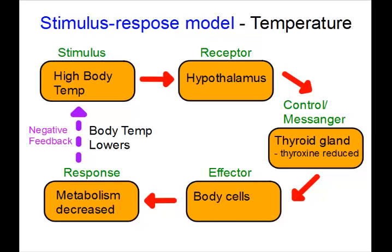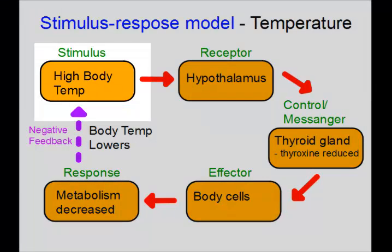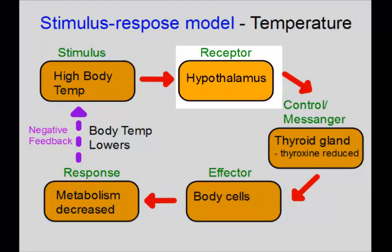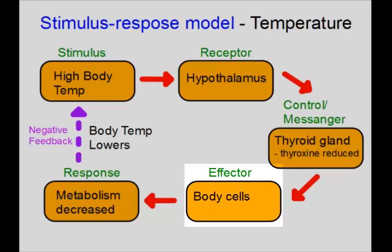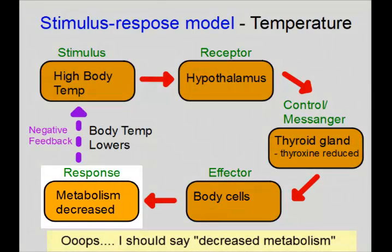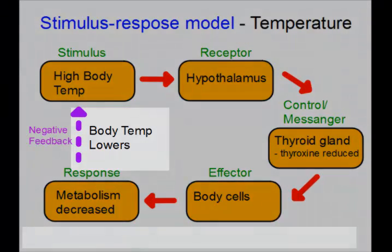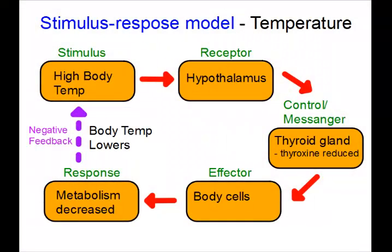Let's look at the example of high body temperature. The stimulus is that high body temperature, received at the hypothalamus. The control of this response involves the thyroid gland releasing thyroxin, which causes body cells — the effector — to increase metabolism, working faster and producing more body heat. The negative feedback response is that body temperature is lowered, reducing the original stimuli. That said, this is just one response; vasodilation and sweating could also occur.